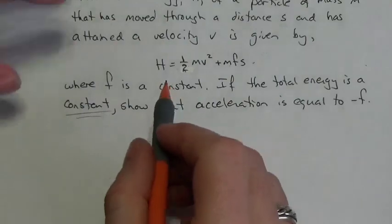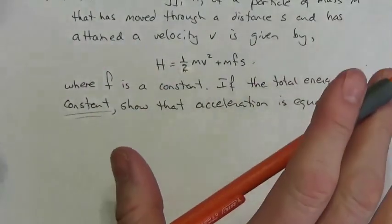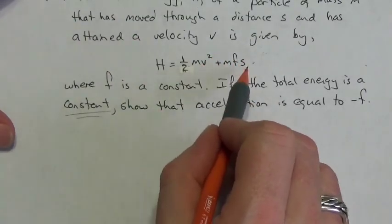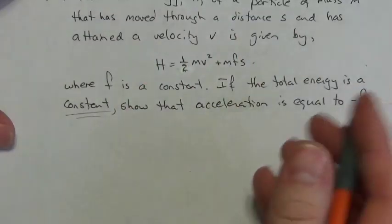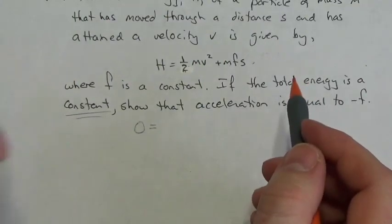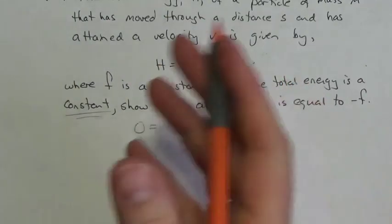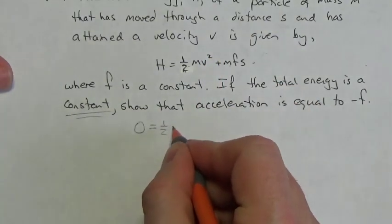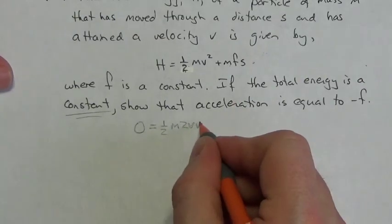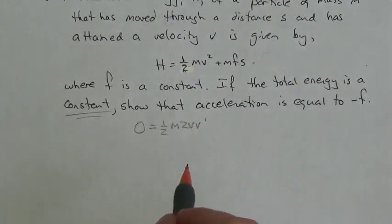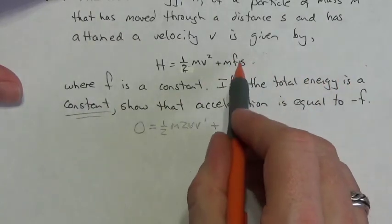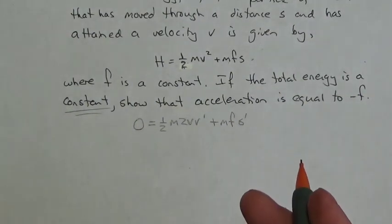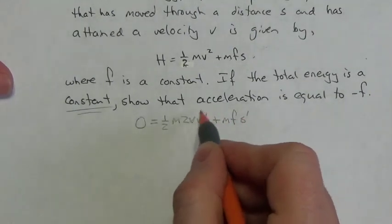There is no acceleration written here, but I know the derivative of velocity is acceleration. Time isn't written explicitly, even though v and s are both functions of time. The derivative of h, being a constant, is zero. m is a constant. The velocity is a function of time, so taking the derivative gives ½m · 2v · v′. Plus m is a constant, f is a constant, and the derivative of s is s′.